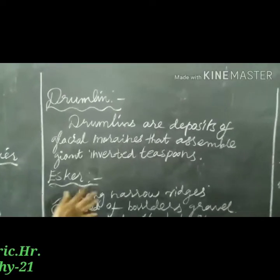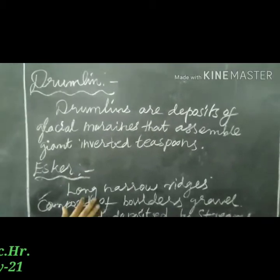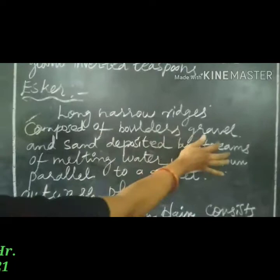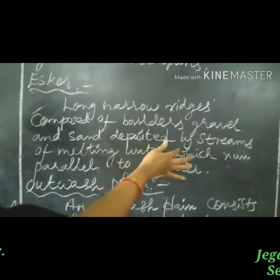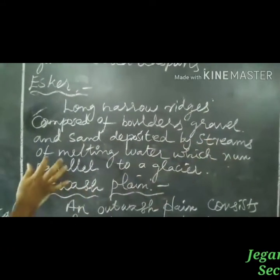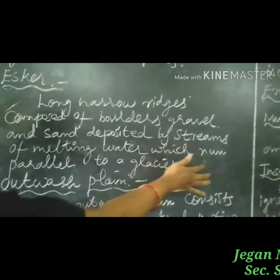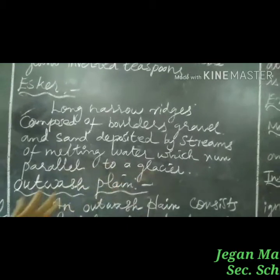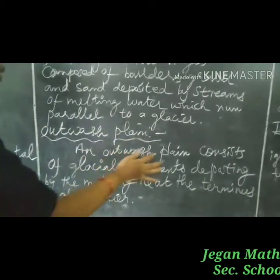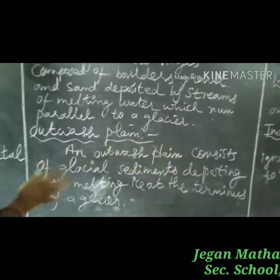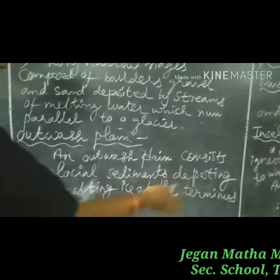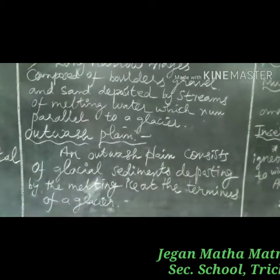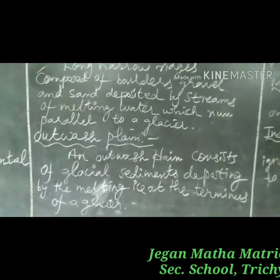Next is Eskers. These are long narrow ridges composed of boulders, gravel, and sand deposited by streams of melting water which run parallel to a glacier. The Outwash Plain consists of glacial sediment deposited by the melting ice at the terminus of a glacier.